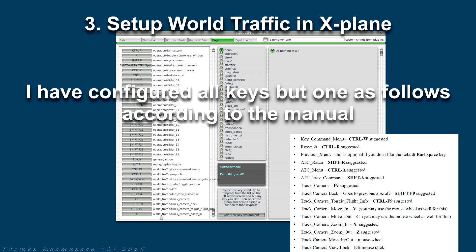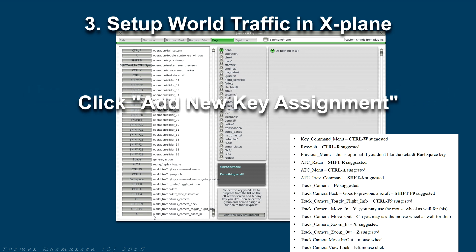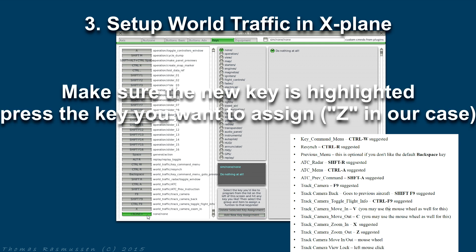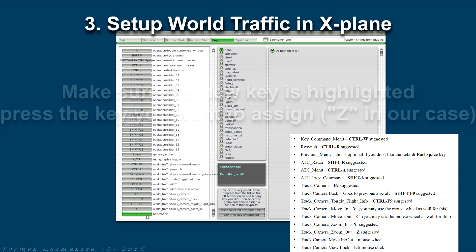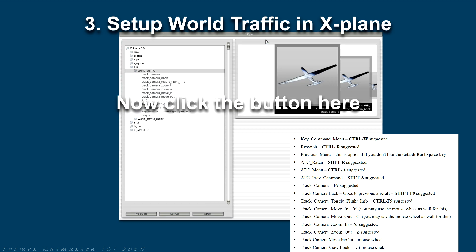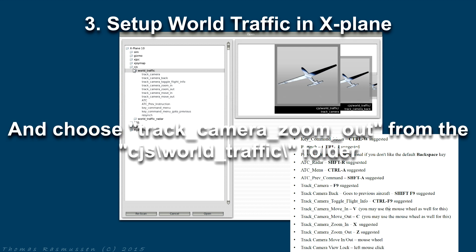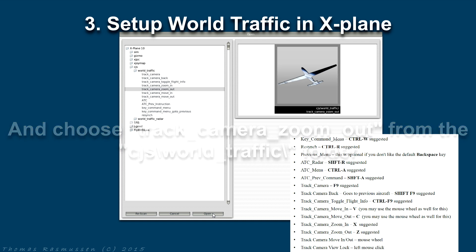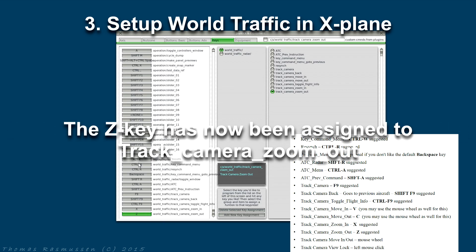I have already configured all keys but one — the track camera zoom out key. This is added by clicking Add New Key Assignment. Make sure the new key is highlighted, then press the key you want to assign — in our case C. Then press the button and choose track camera zoom out under the CJS and World Traffic folder, and press open. Now the C key has been assigned to track camera zoom out.